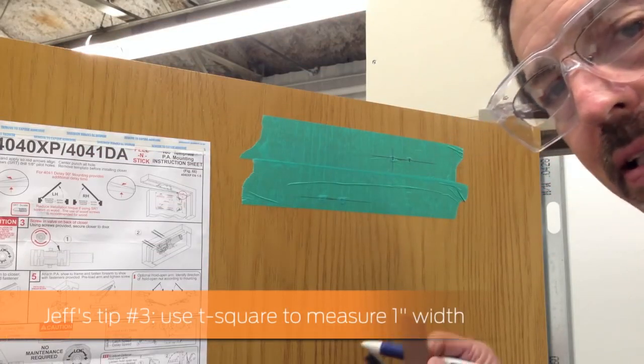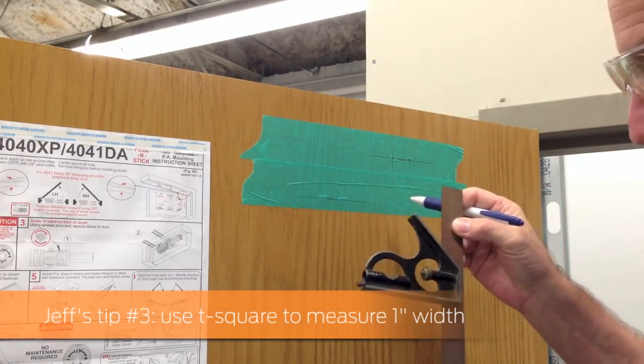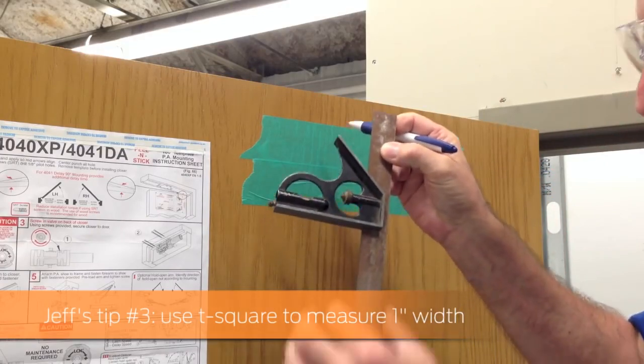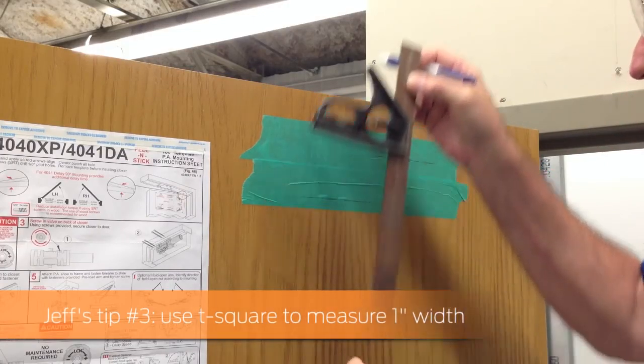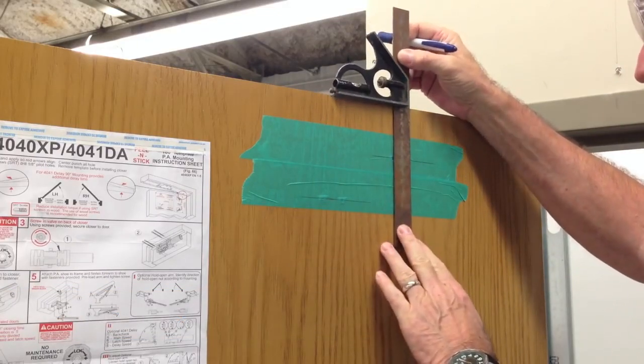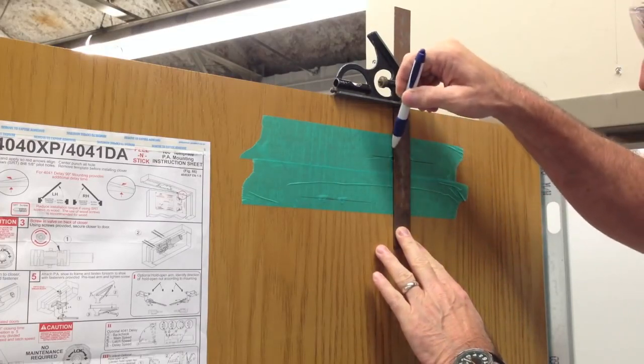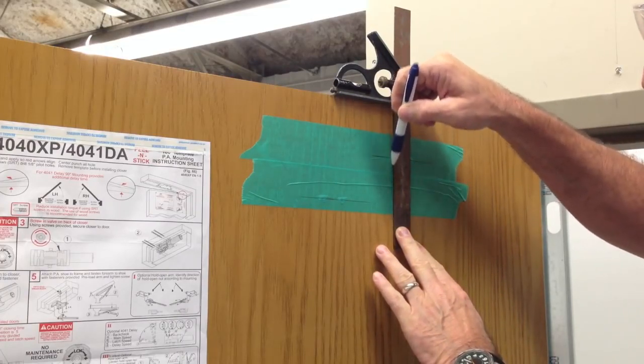When you need to make a second mark exactly one inch away from the original mark, grab your T-square. The width of the ruler is one inch. Lay it up on the work surface, find your first mark, make sure the T-square is level, and now you have the exact position of the second mark one inch away.